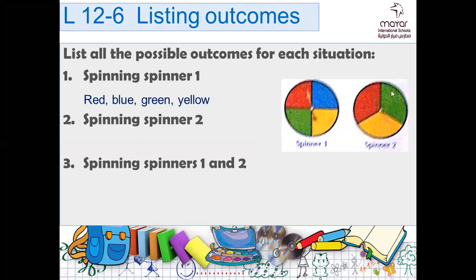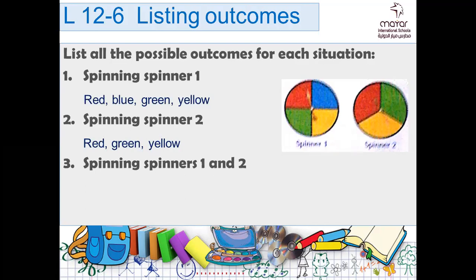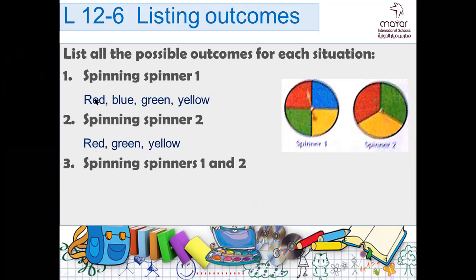What are the outcomes that you could have if you spin spinner one and two? Spinner one gives red, yellow, and green. So the first one is red with red. Then what could you have also? Wait — we are on red. Red with red, then red with what? Red with green. Then red with yellow.